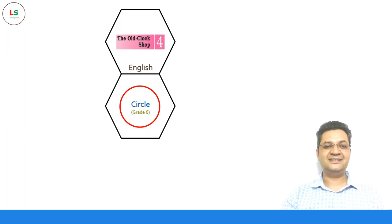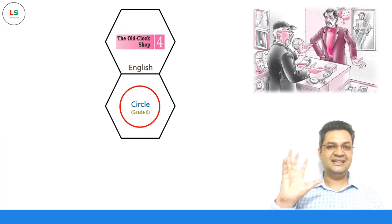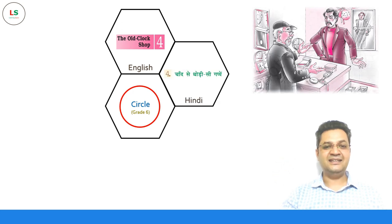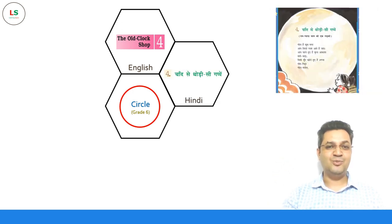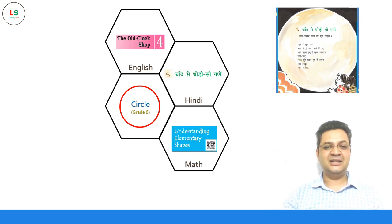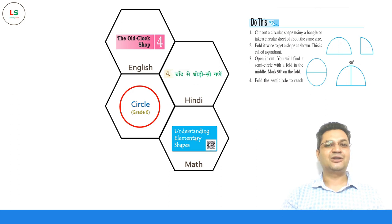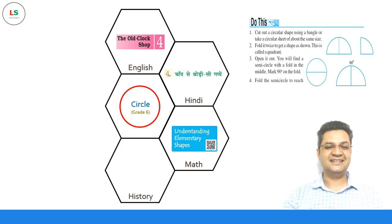In English, there is a chapter called 'The Old Clock Shop', which talks about clocks that are circular. In Hindi, there is a chapter 'Chaant Se Thodi Si Gappen' — again, the moon is circular. When we talk about Mathematics, there is a chapter on understanding elementary shapes, which talks a lot about circles.